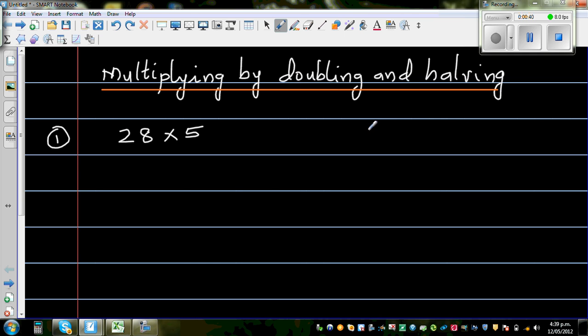Suppose if you want to do 8 times 4. You know it's 32. Now what if I ask you 16 times 2? That is also 32. What is 32 times 1? That is also 32. I want you to look at the pattern here.